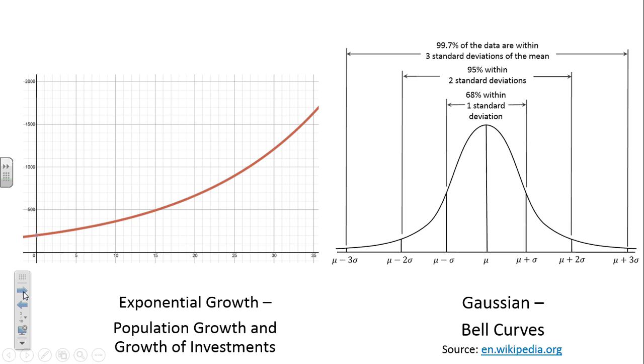So exponential growth, often used with population growth. But eventually it stops, right? Because there's not enough food and housing and jobs to be able to continue. Natural resources become consumed. Also, growth of investments. If we're talking about your stock portfolio or how much you're loaning to somebody, that's exponential growth.